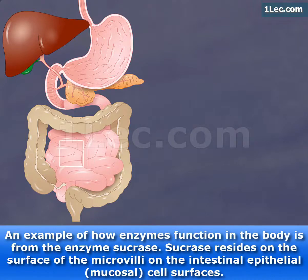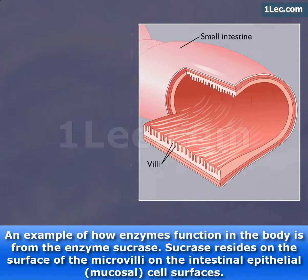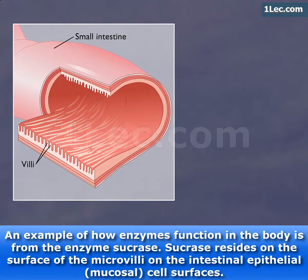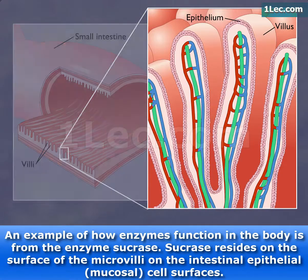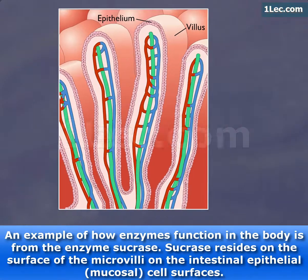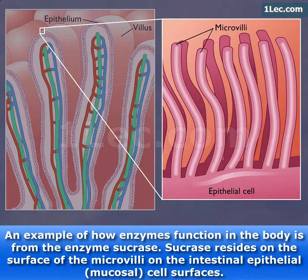An example of how enzymes function in the body is from the enzyme sucrase. Sucrase resides on the surface of the microvilli on the intestinal epithelial mucosal cell surfaces.